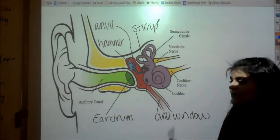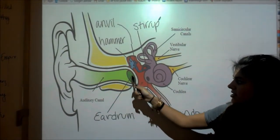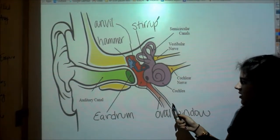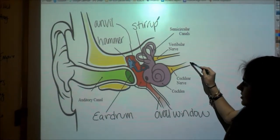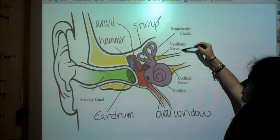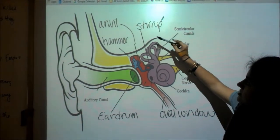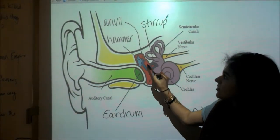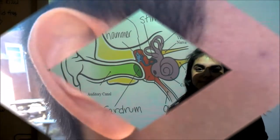Now we have the ear. Its parts include the auditory canal, the eardrum, the oval window, the cochlea, the cochlear nerve, the vestibular nerve, the semicircular canals, and the three bones inside the ear: the stirrup, the anvil, and the hammer.